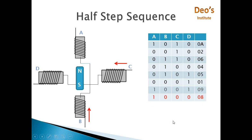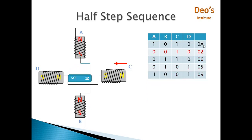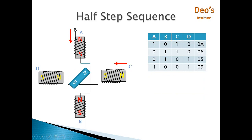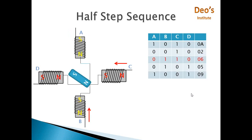In full step sequence it requires 4 steps and in half step sequence it requires 8 steps to complete one rotation. The sequence we have discussed produces clockwise rotation. If you apply the sequence in reverse order it will be anti-clockwise. For half step anti-clockwise the order would be 8,2,6,4,5,1,9,8. For full step anti-clockwise, the sequence is 9,5,6,8 — meaning first A and D on, then D and B on, then B and C on, then C and A on.